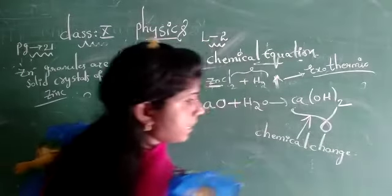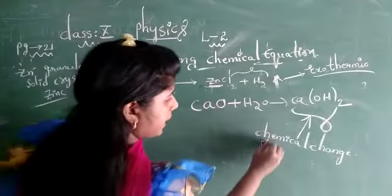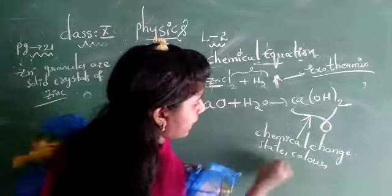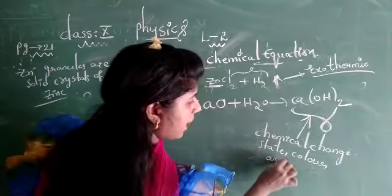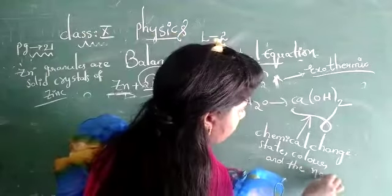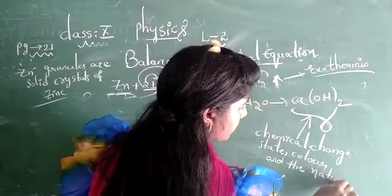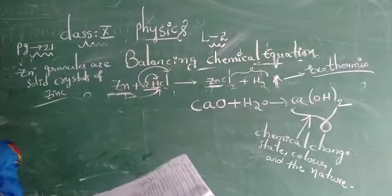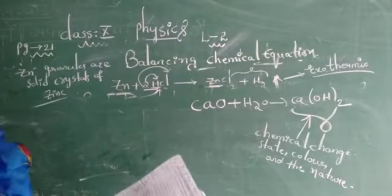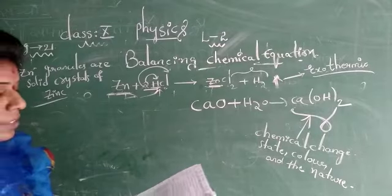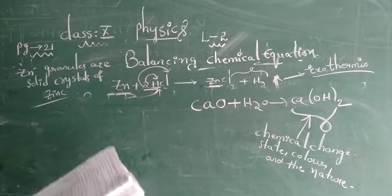The physical properties — the state, color, and nature — entirely begin to change. The description of a chemical reaction in a sentence, as in activity one, is quite long. It can be written in shorter form as a word equation.